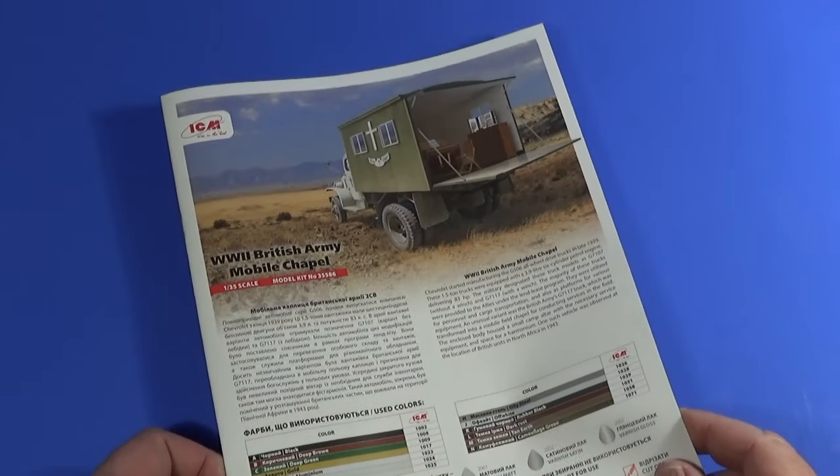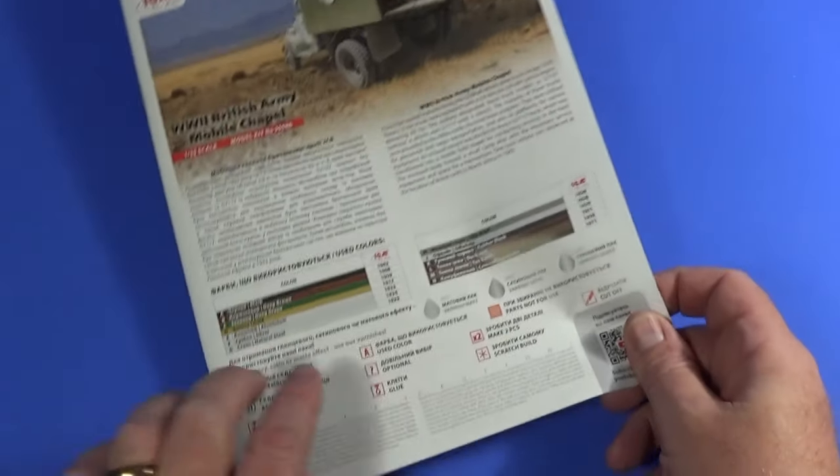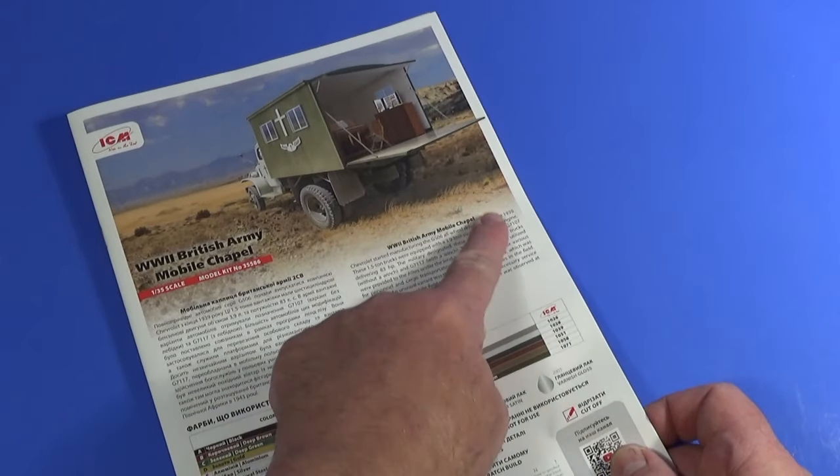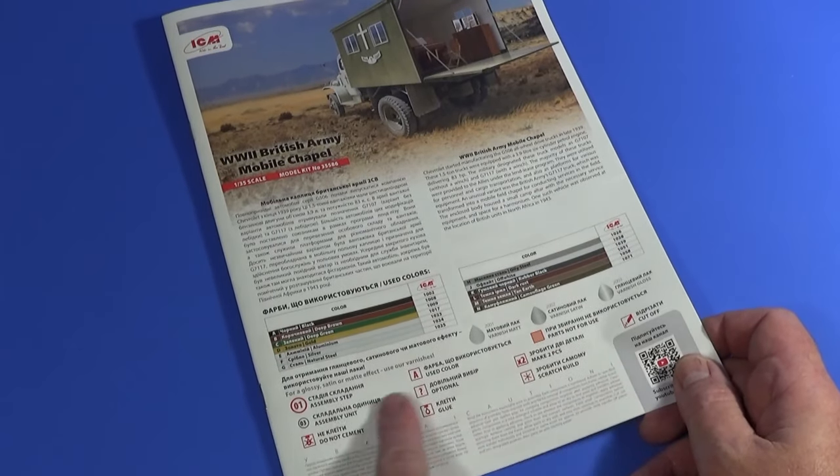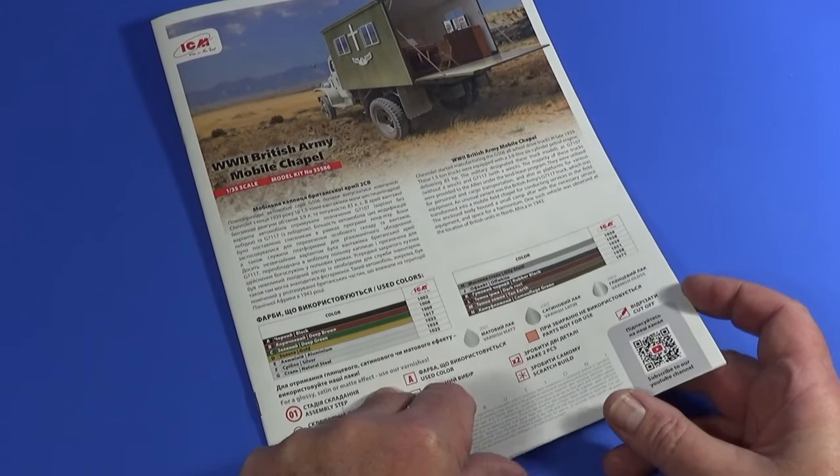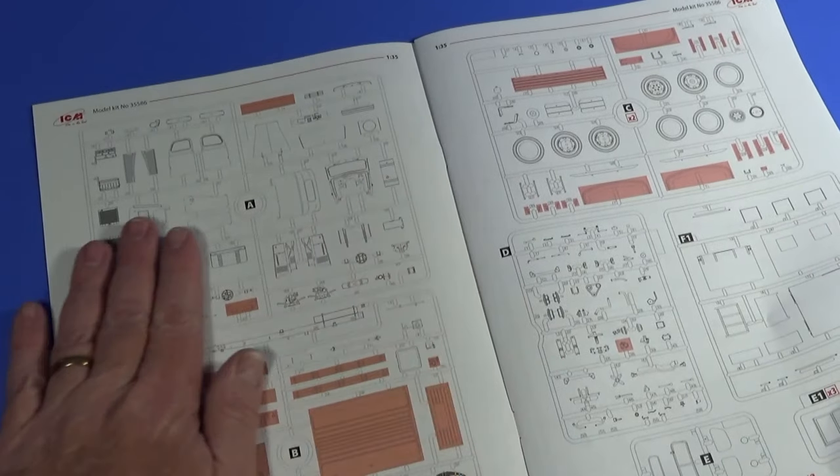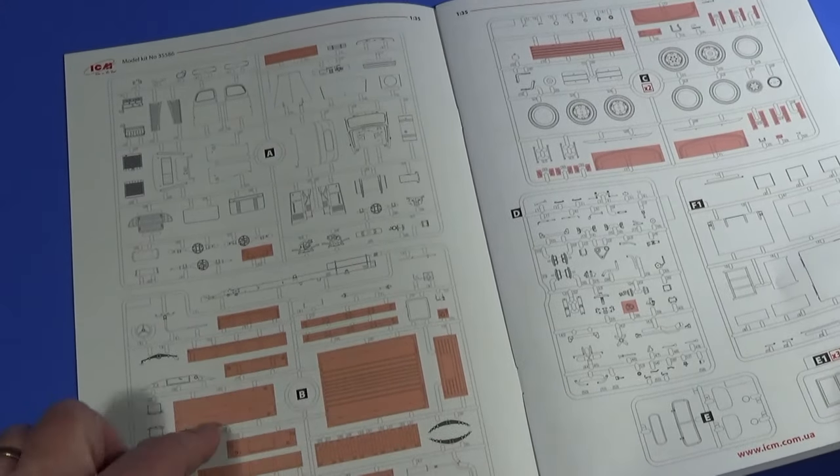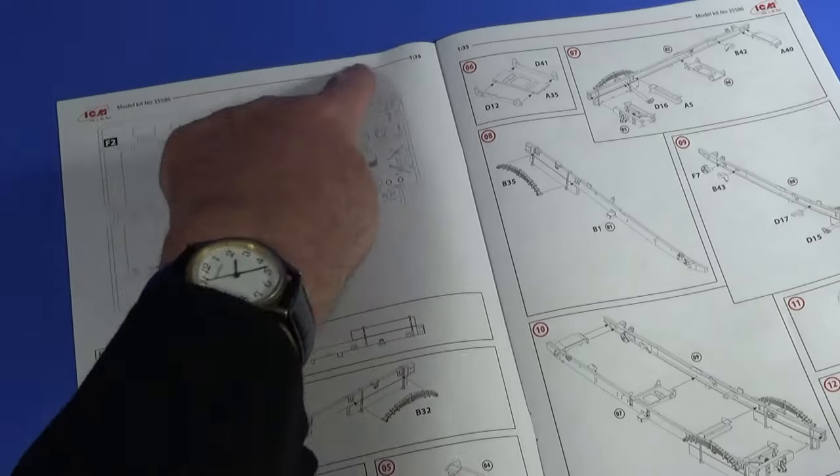And then the instruction booklet. Very much modern ICM. Full color reprise of the box art, full color callouts using ICM color codes. Description of the vehicle in English and Ukrainian. All of the icons are explained, and there's a QR code link to subscribe to the channel. Don't forget to subscribe to my channel while you're at it. Inside, we start off with the frame maps. As you can see on frame B, most of the rear bed you don't use because it's a customized bed. These are the parts that replace it and the contents as well.